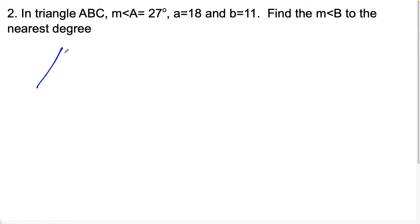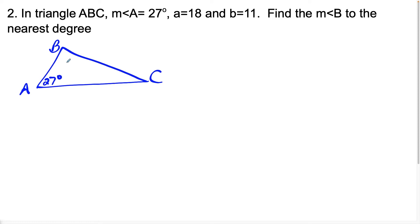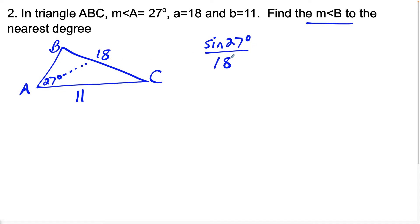Now let's look at question two. We have triangle ABC — let's draw this out. We're told the measure of angle A is 27 degrees, the measure of side A (opposite angle A) is 18 units, and the measure of side B (opposite angle B) is 11 units. We need to find the measure of angle B to the nearest degree. We set this up similarly: sine of 27 degrees over 18 equals sine of angle B over 11.